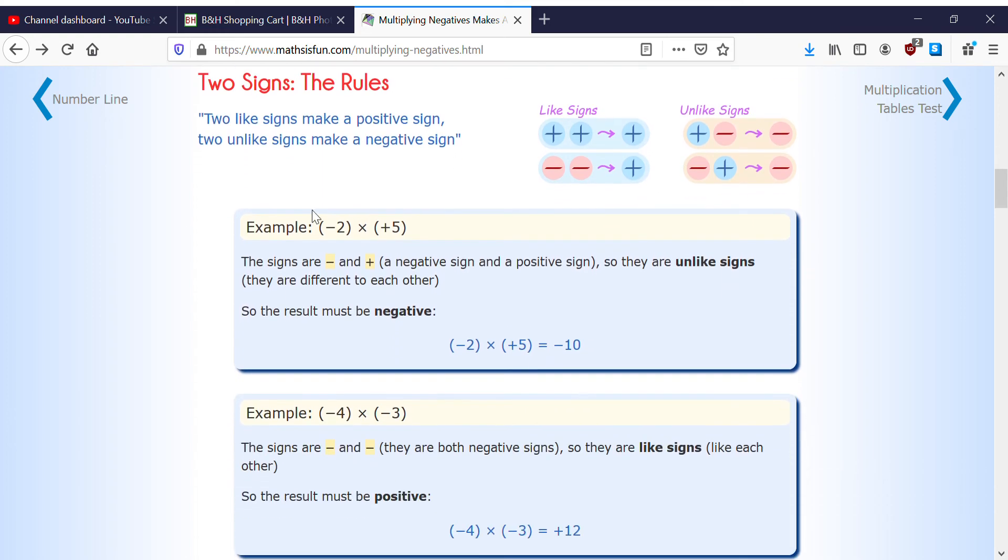An example: negative 2 times positive 5 is negative 10, because negative 2 and then you're just adding the negative 2 times the 5. Since it's negative 2 and it's still going down, it's going below so it's negative 10. And here it's negative 4 times negative 3, which is 2 negatives equal a positive.